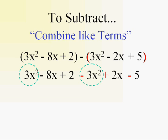3x squared, a positive 3x squared, and a negative 3x squared. That's just zero. We don't write it. Don't write zero.